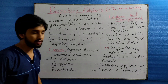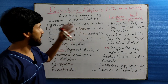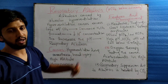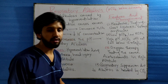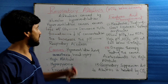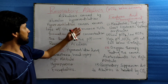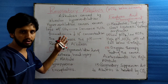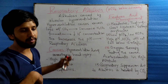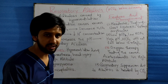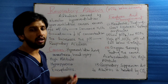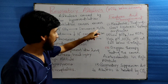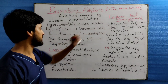Respiratory alkalosis is caused by alveolar hyperventilation. This alveolar hyperventilation results in excessive carbon dioxide loss. Excessive carbon dioxide loss will result in the decrease of carbonic acid, that is H2CO3.